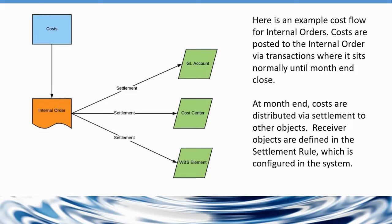So in this flow, we are actually talking about a real internal order, one that can settle costs to additional objects. So at the top, like I said, we have costs coming into the internal order, and you have three examples of settlements. So what we're showing here is that the internal order has the ability to settle to multiple types of objects. It can settle to a GL account,